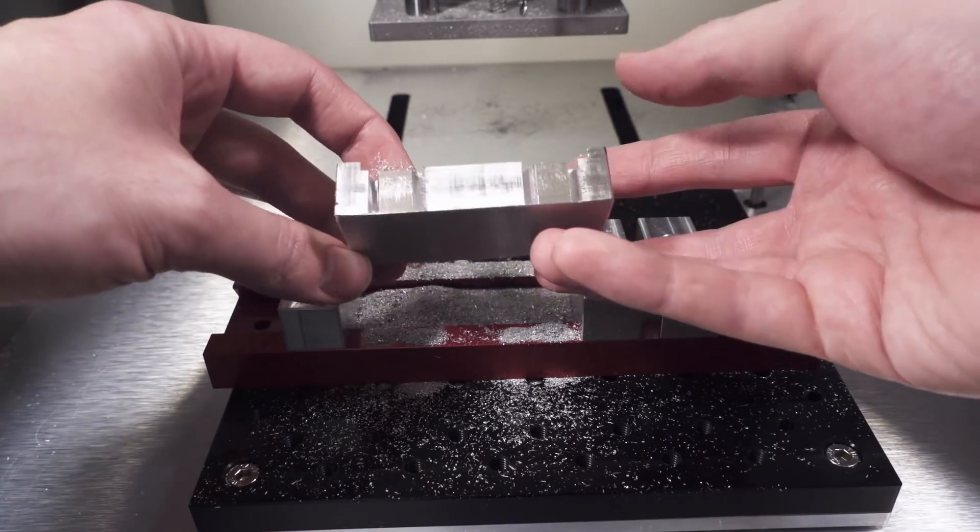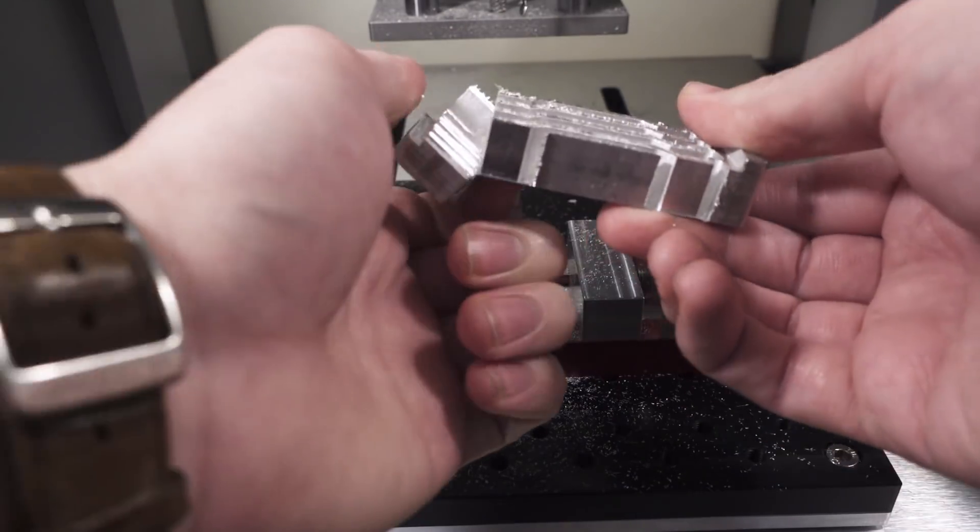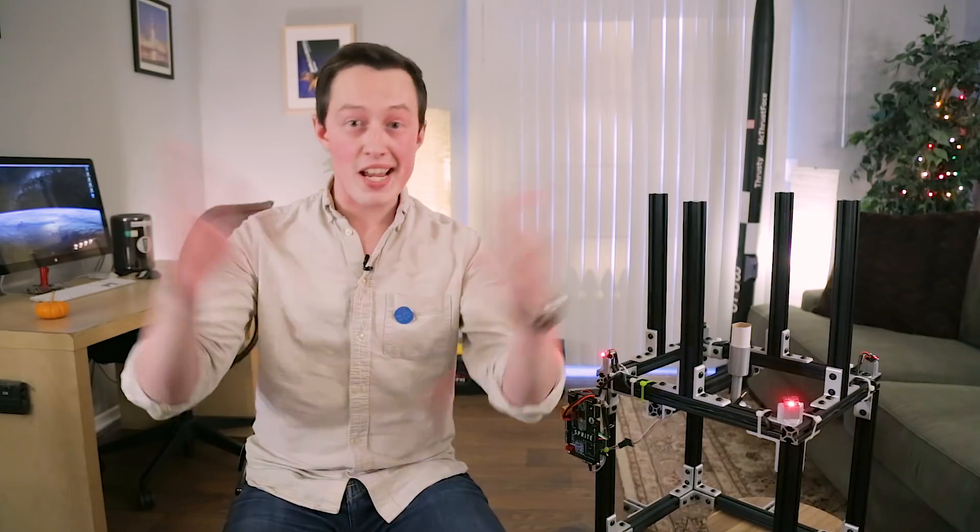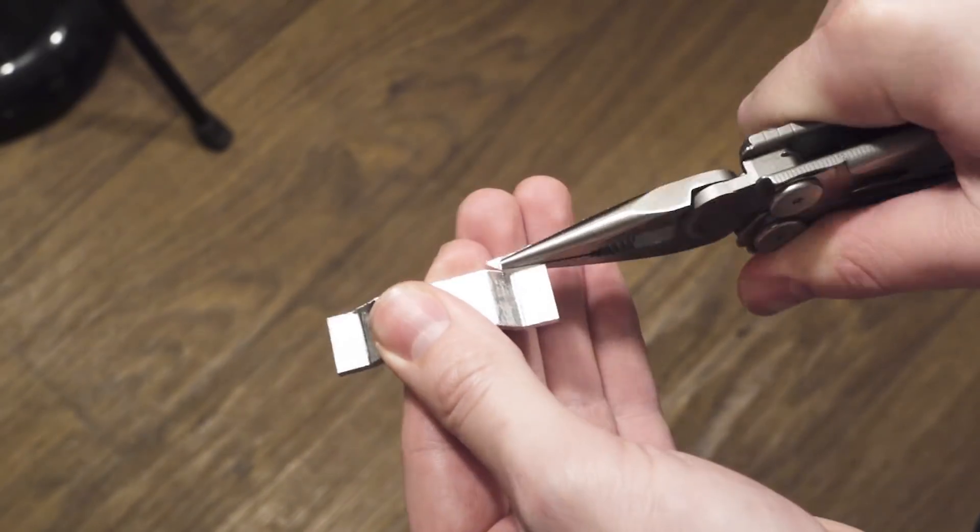So we haven't actually cut through the aluminum but we have made a ton of progress in getting there and so I think I can probably finish up the rest of this by hand. Which is exactly what I did! I used pliers to remove the final bits of aluminum and then a file to grind down the sharp edges.